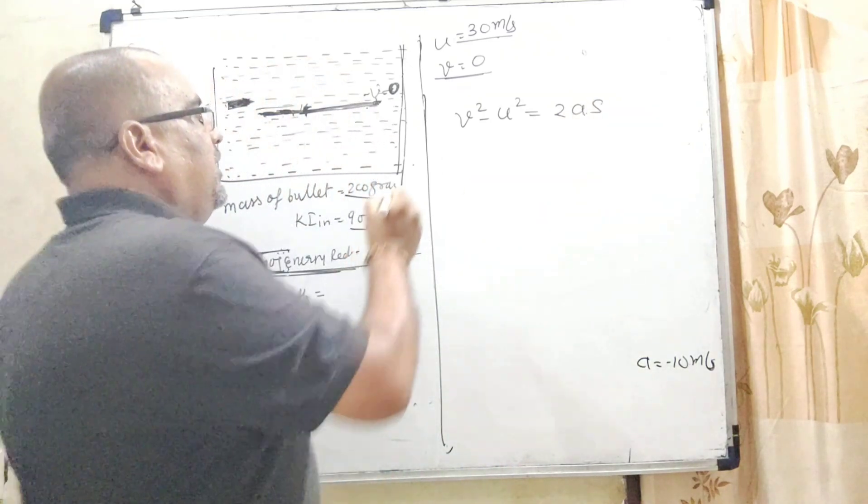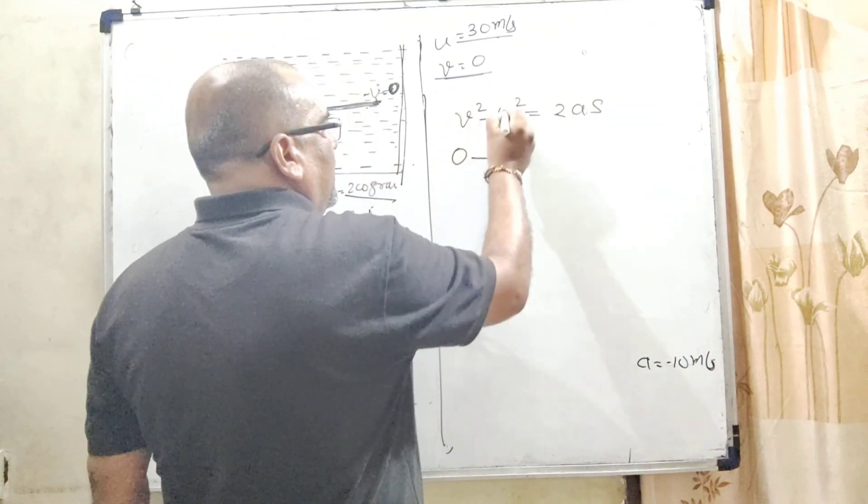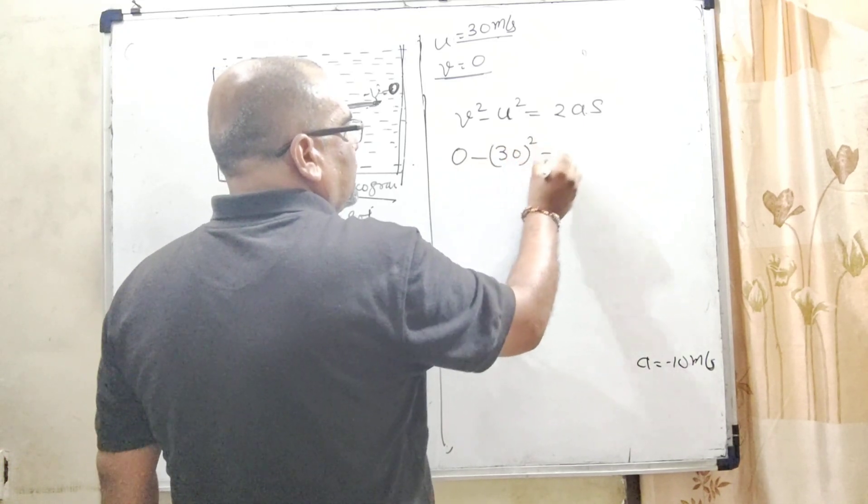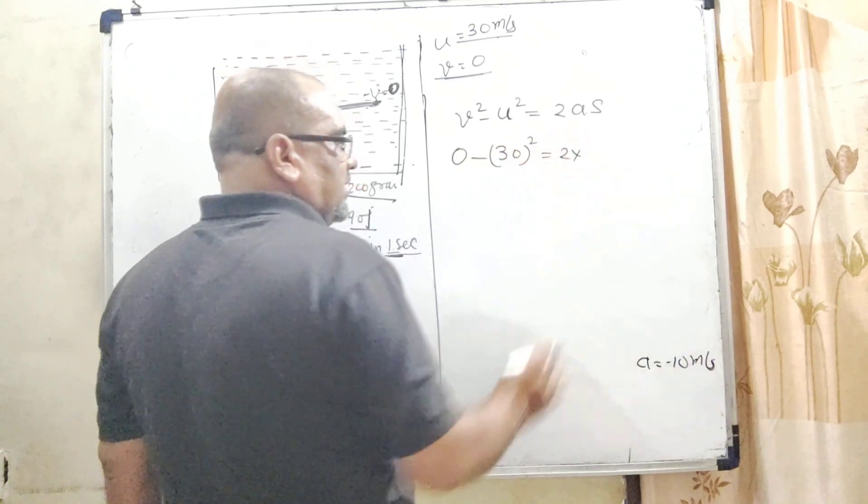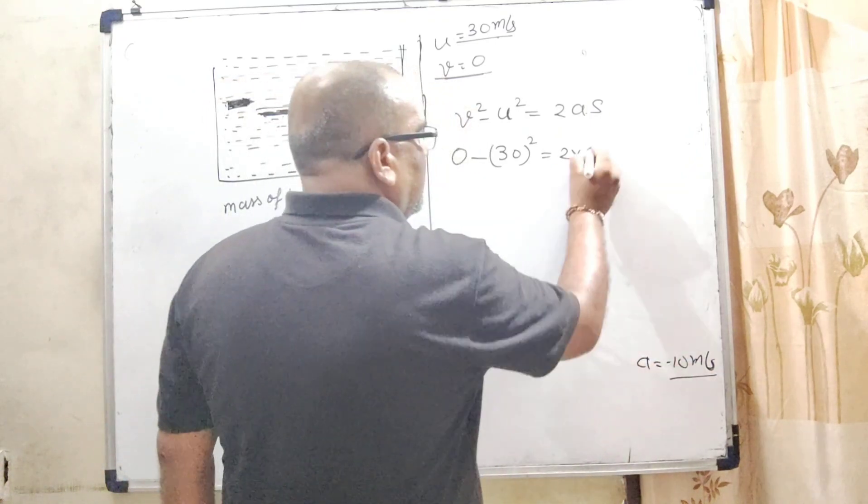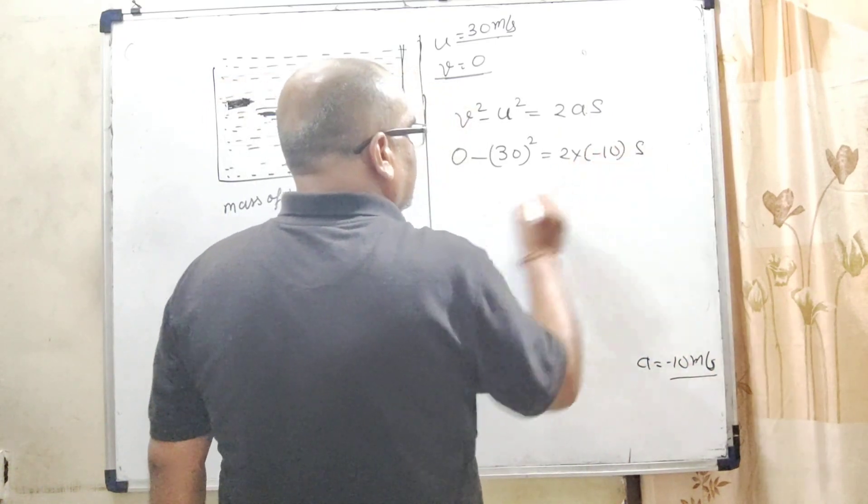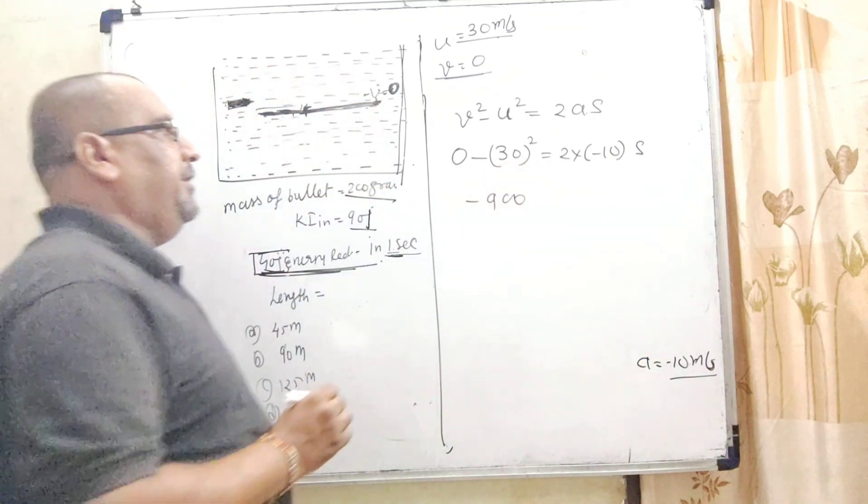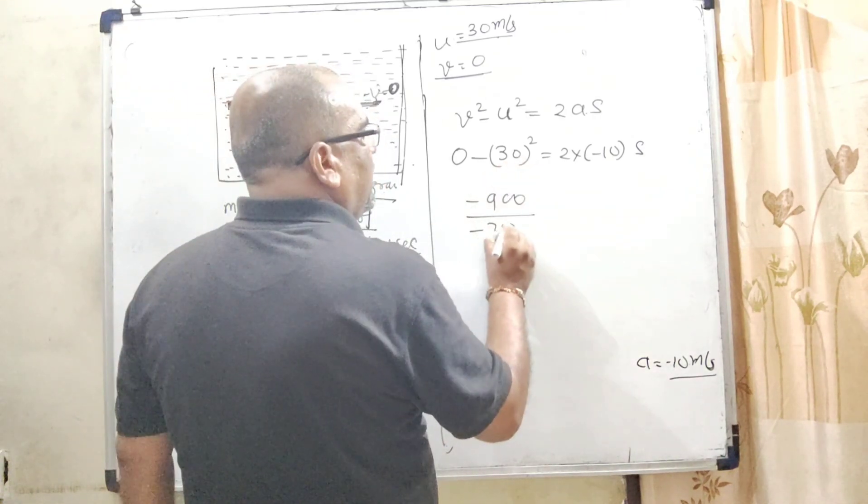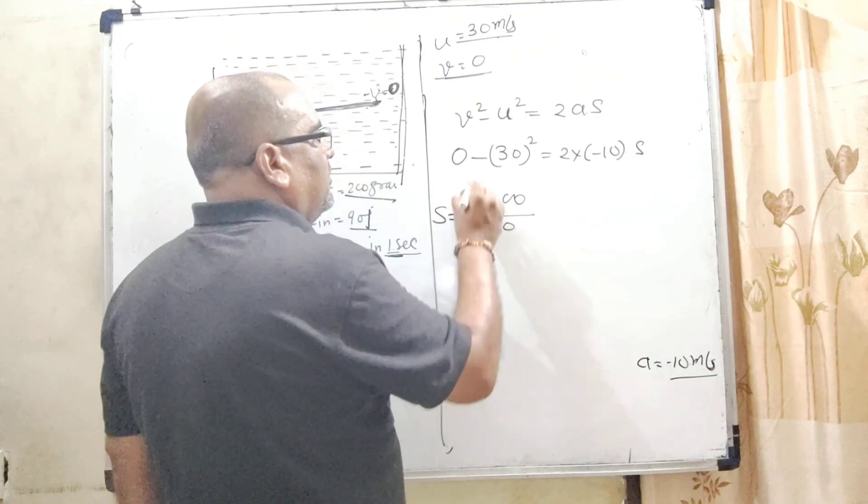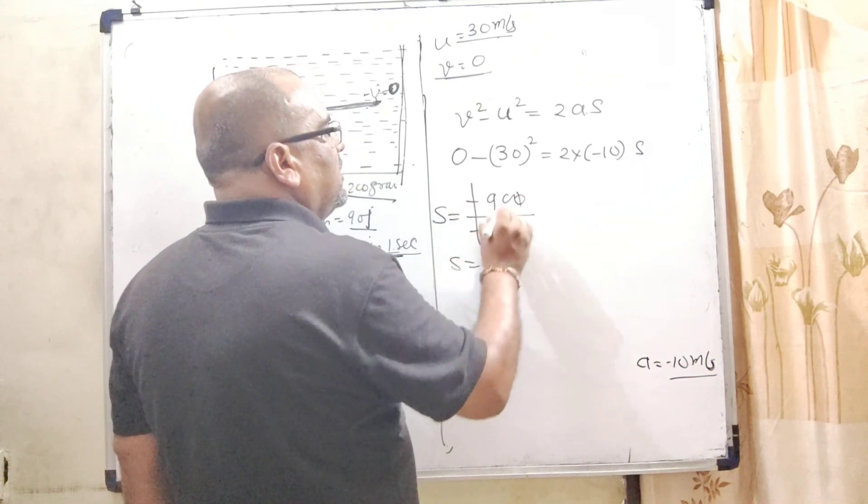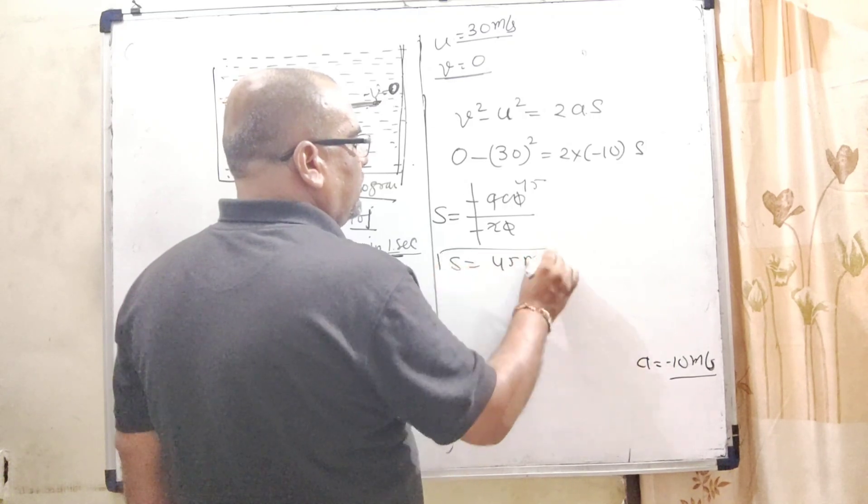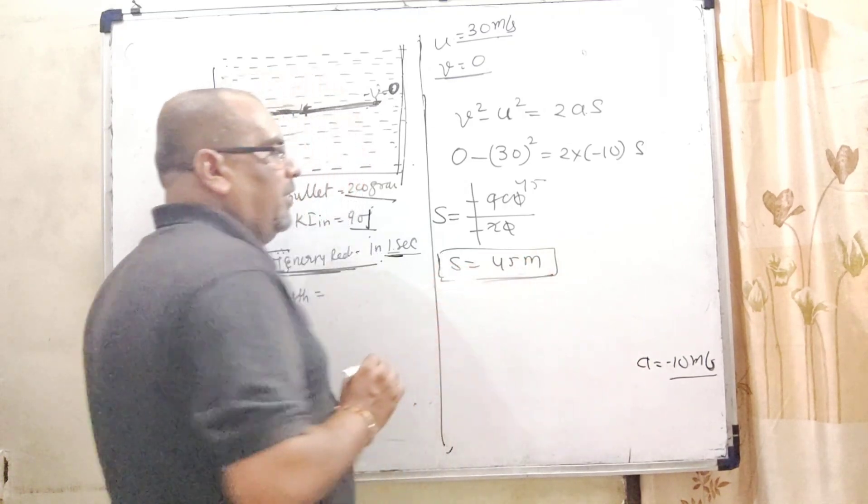Final velocity is 0. Initial velocity is 30 meters per second, squared. Two times acceleration, which we calculated as minus 10, times s. So minus 30 squared equals minus 900. Minus 20s equals minus 900. Minus minus cancels out. This gives 45. The distance covered by this bullet to come to rest is 45 meters.